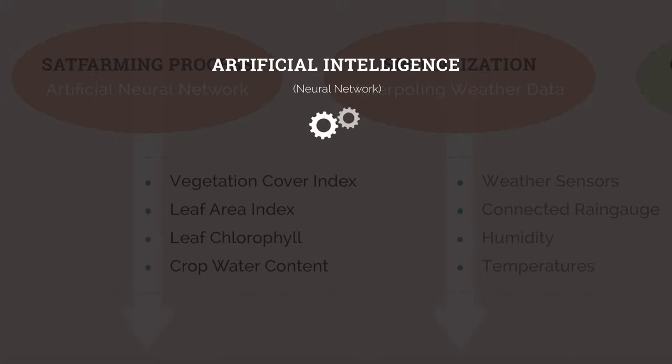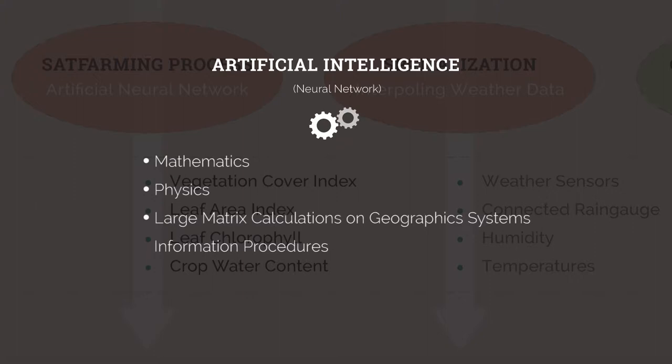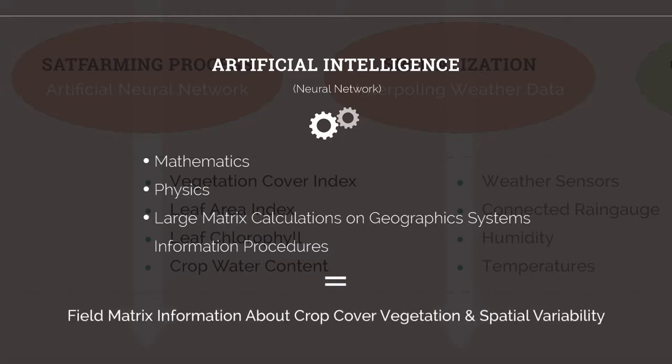That part of the system deals with mathematics, physics, and large matrix calculations on geographic information systems procedures. This part generates field matrix information about crop cover vegetation and crop spatial variability.